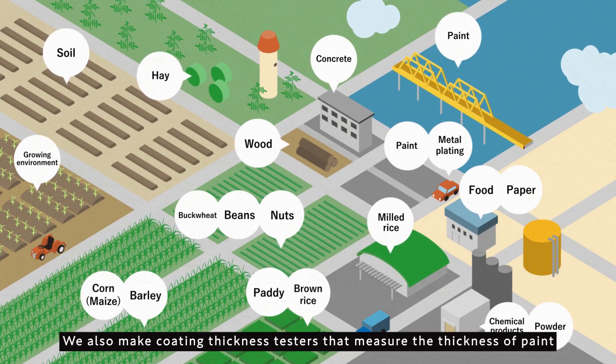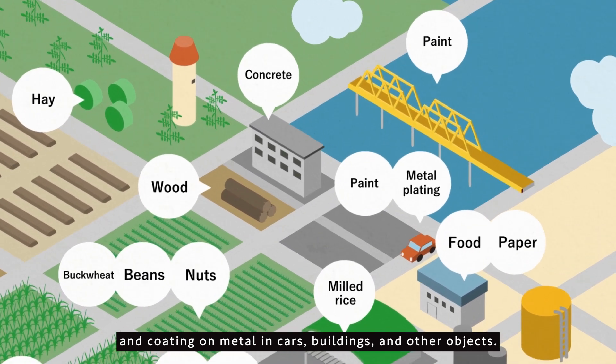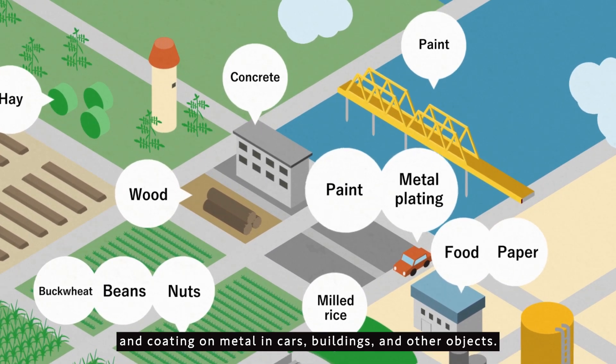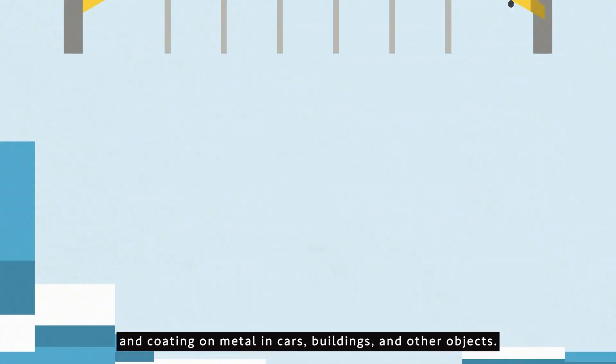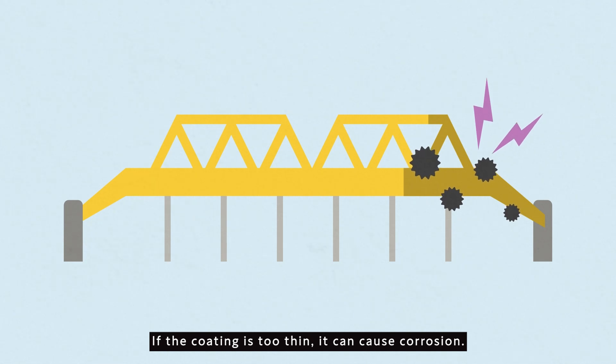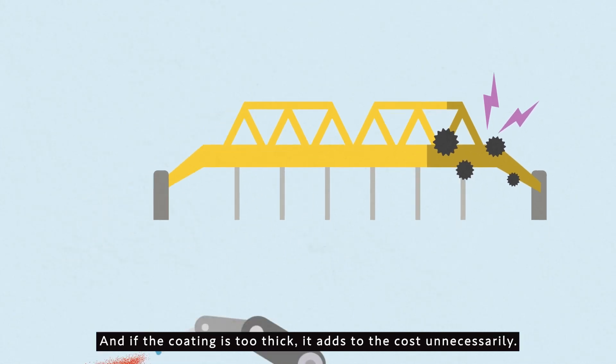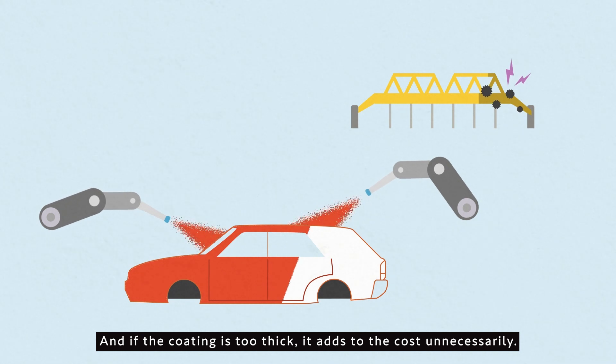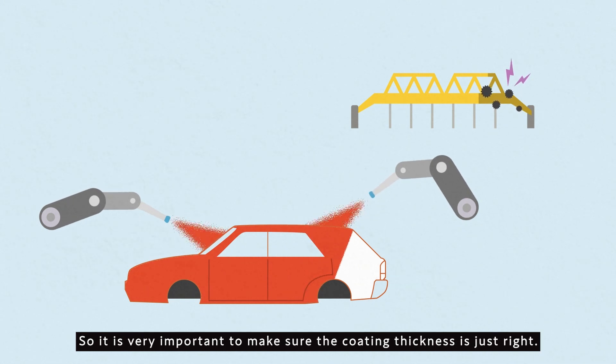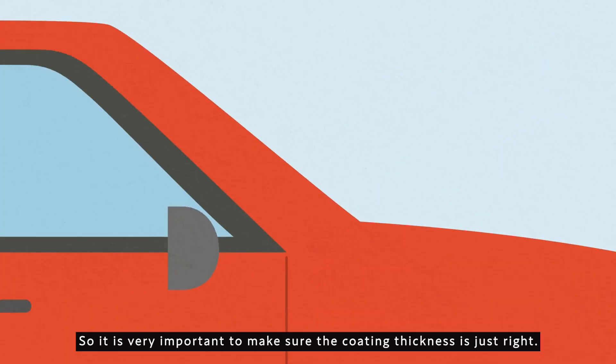We also make coating thickness testers that measure the thickness of paint and coating on metal in cars, buildings and other objects. If the coating is too thin, it can cause corrosion. And if the coating is too thick, it adds to the cost unnecessarily. So it is very important to make sure the coating thickness is just right.